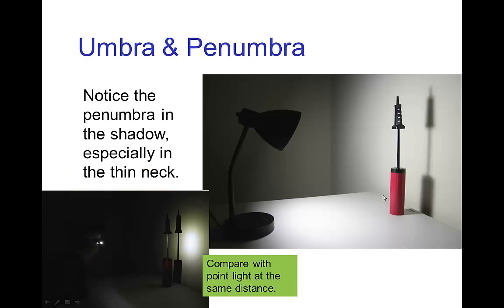Here's an example of a light bulb with a larger size than the small tiny light bulb which cast a sharp shadow. This one has a fuzzy shadow because of the penumbra. It's particularly noticeable in the thin neck of this object in that shadow.